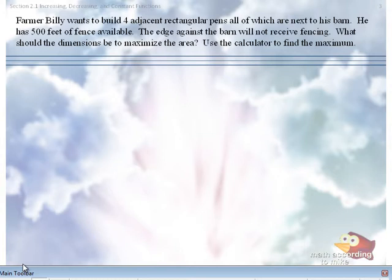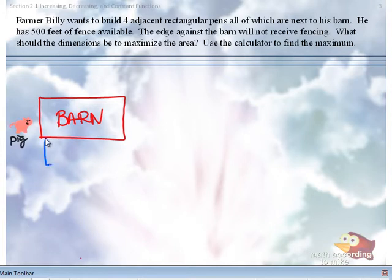Use your calculator to find the maximum. While you're sitting there writing it down, what do you think we should do first? Draw a picture. Yep, sounds good to me. All right, here's the barn. I want you to figure out what the pens will look like based on the barn. So this is what your four adjacent rectangular pens all next to the barn should look like. Adjacent means they have to touch each other and they all have to be next to the barn.